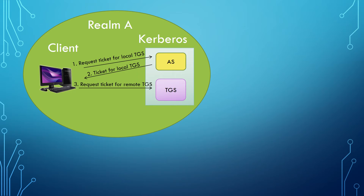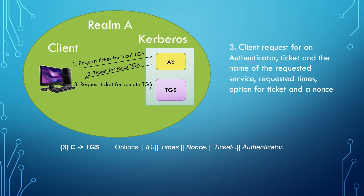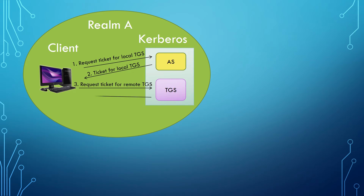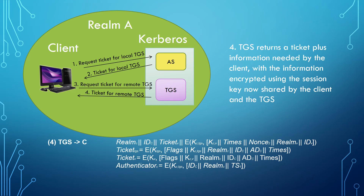To request a ticket for the remote TGS, the client requests an authenticator, ticket, and the name of the requested service, requested times, option for ticket, and a nonce. The TGS returns a ticket plus information needed by the client, with the information encrypted using the session key now shared by the client and the TGS.